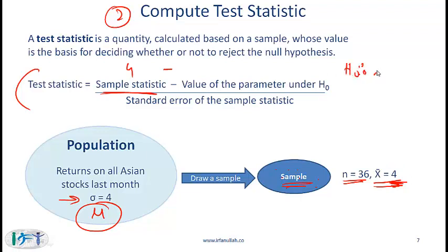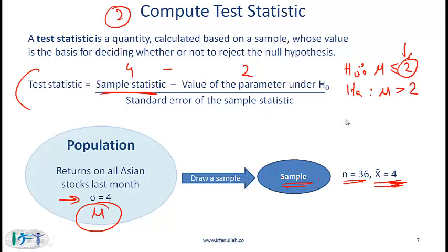The null hypothesis is mu ≤ 2 and the alternate is mu > 2. The hypothesized value is 2. So the test statistic is (4 − 2) divided by the standard error, which is sigma over root n. With sigma = 4 and n = 36, root n = 6, the standard error is 4/6. When we do the math, we get a test statistic of 3.